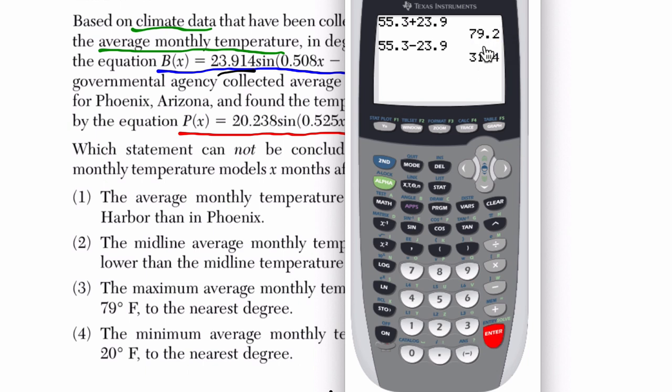And the range between these two is our variation. So 79.2 minus 31.4. That's 47.8.